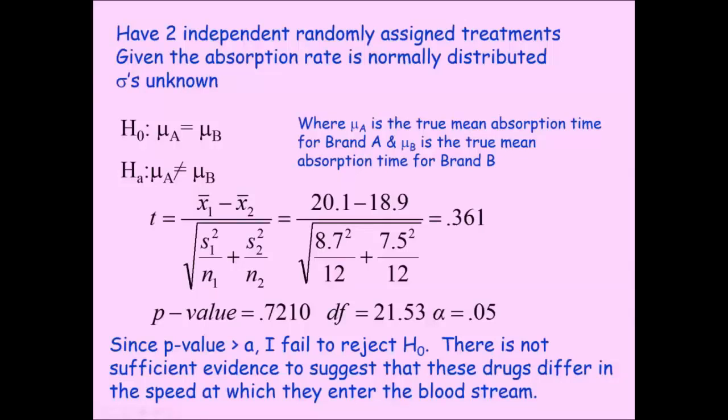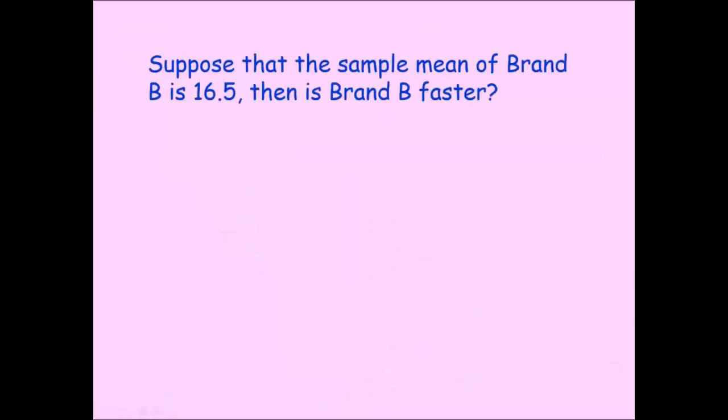Okay, so let's say either we made an error in our calculations or we redid brand B and came back and found something out. So let's say we actually change brand B's mean time to 16.5, but we keep everything else the same. Does that in fact make a difference? Does that mean brand B is in fact better?